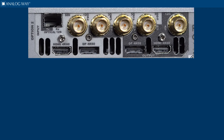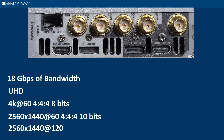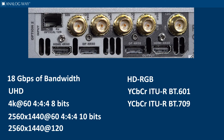HDMI 2.0 supports up to 18 gigabytes per second of bandwidth, allowing resolutions up to UHD and 4K at 60Hz 4:4:4 8-bit, 2560x1440 at 60Hz 4:4:4 10-bit, or 2560x1440 at 120, and supports RGB 444 YCBCR ITU-R BT.601, BT.709, and BT.2020 color space.